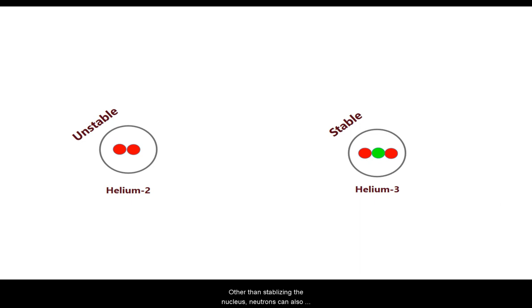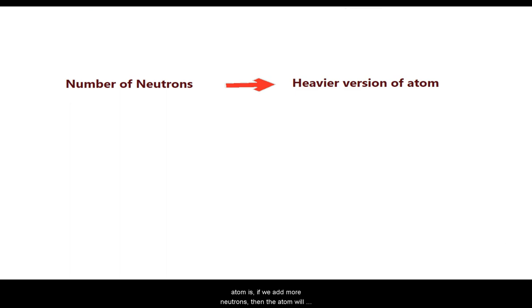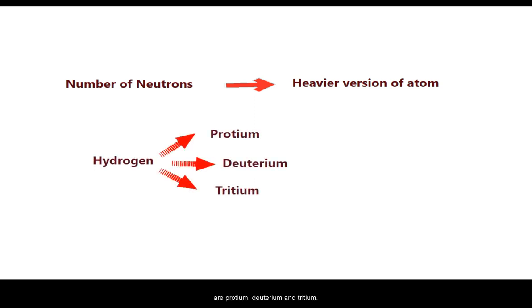Other than stabilizing the nucleus, neutrons can also help us in making isotopes. The number of neutrons in an atom decides how heavy the atom is. If we add more neutrons, then the atom will be heavier. The heavier version of an atom is called isotopes. For example, hydrogen has three known isotopes: protium, deuterium, and tritium.